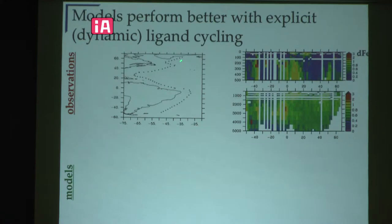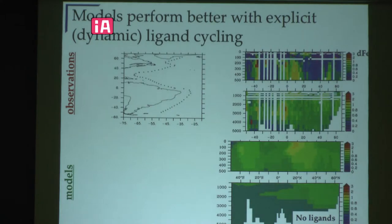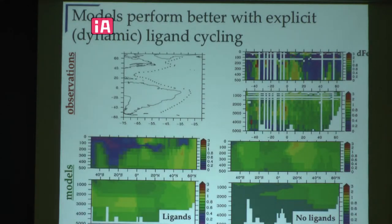Here on the top is a map of the Atlantic Ocean showing stations where we took dissolved iron measurements on a GEOTRACES program cruise. Those dissolved iron measurements are represented in this figure — the top 500 meters in the top panel and 1,000 to about 5,000 meters in the bottom. If we try to model these dissolved iron concentrations without including organic ligands, the model output doesn't match the observations. But a model that includes dynamic cycling of organic ligands matches the observations much better.